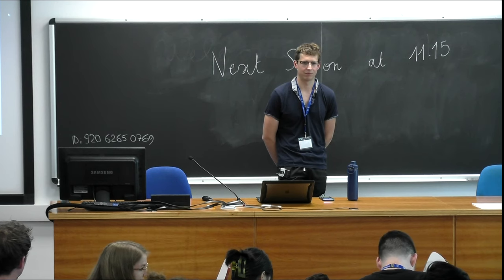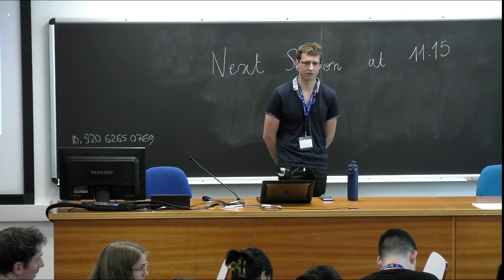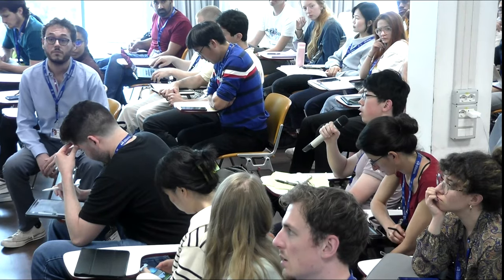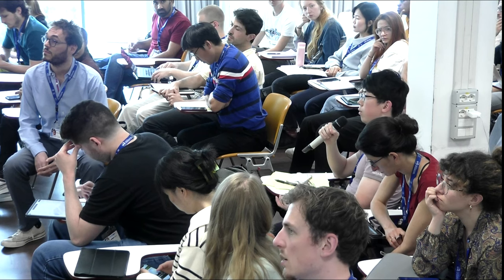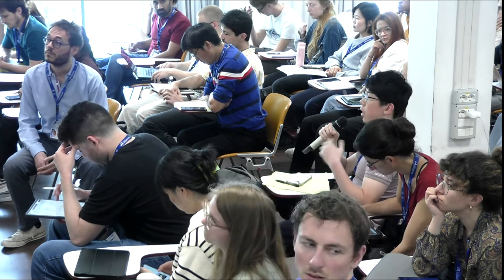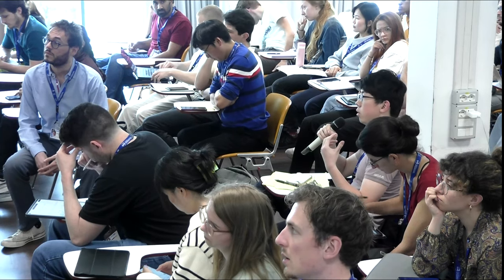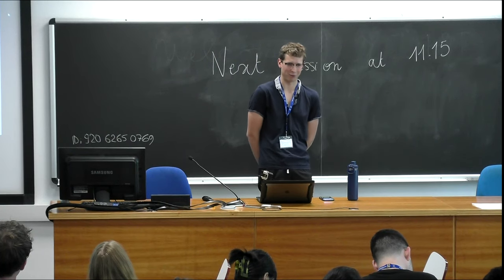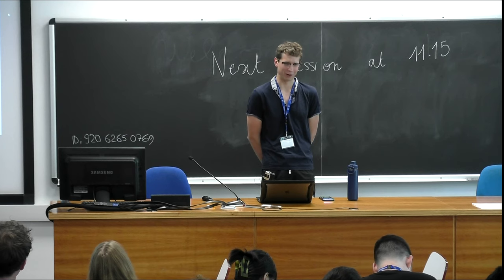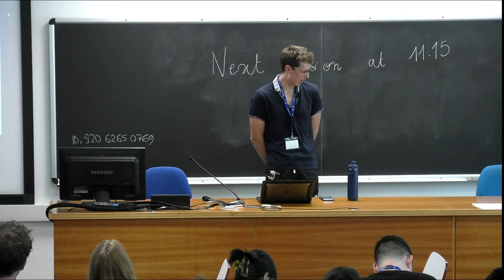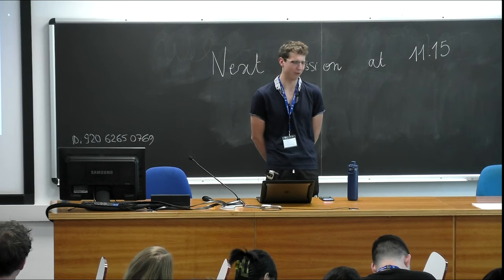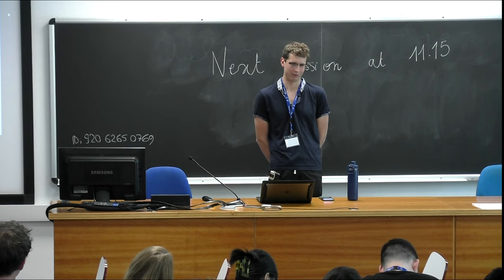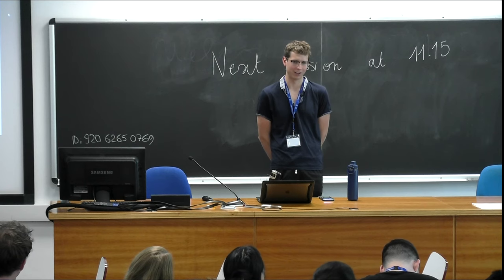Question: can you say something about when the underlying network is sparse — for example, each neuron has just a constant number of neighbors? Answer: presumably you could write down a cavity method calculation for sparse models — that's actually the setting where cavity methods are usually applied, like tree-structured graphs. I haven't thought much about that. People have certainly studied dynamics of recurrent networks with dilute synapses (order one connections per neuron), but I don't have a clear idea of what to expect.